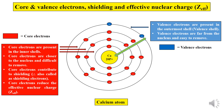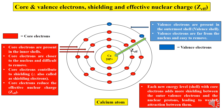Most importantly, core electrons reduce the effective nuclear charge. Effective nuclear charge is the electrostatic force of attraction between the positively charged protons and the valence electrons. We can also define it as the net positive charge experienced by an electron in a multi-electron atom. Each shell with core electrons adds more shielding between the outer valence electrons and the nuclear protons, leading to weaker attraction between them.